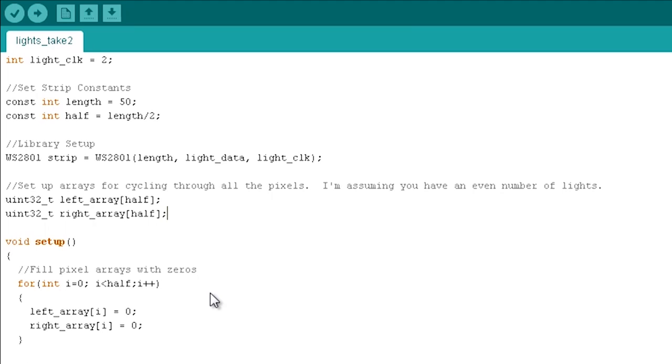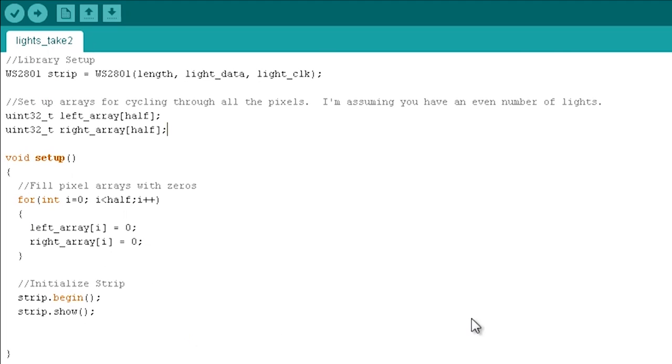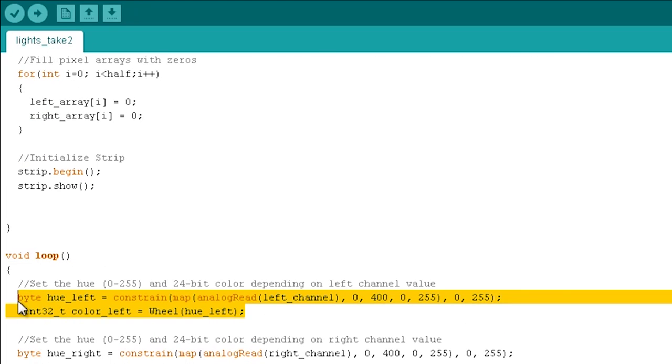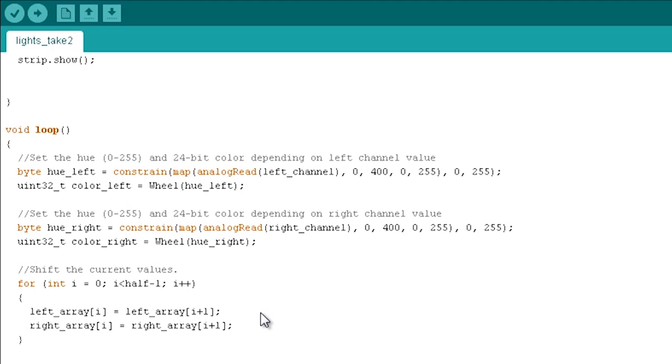I've gone ahead and removed all of our debugging serial stuff since we don't care about it anymore. We're just going to look at all the pretty colors. So, you'll want to make sure on the setup that we fill in each array, the left and right array with zeros, so that we don't have garbage data that we end up propagating. And then you just start the strip like you did before. Both of these lines of code are exactly the same as they were before, except they now refer to hue left and color left, because we now have the same lines of code for hue right and color right. So, these are just looking at the analog channels, getting a hue, and then converting that hue to a 24-bit color, which is stored in a uint32_t.